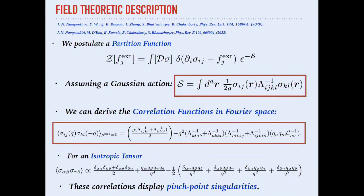From this very simple partition function, you can derive what the correlation functions look like. These equations look complicated only because of the indices, but it is just a Gaussian theory. If you do the calculation, you can predict the correlation function in Fourier space, including the angular dependence. This is connected to recently developed understanding of low-temperature physics of constrained spin systems, which shows very interesting properties called pinch point singularities.